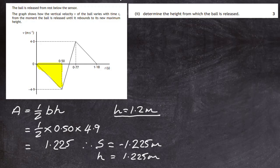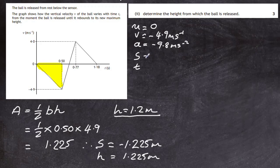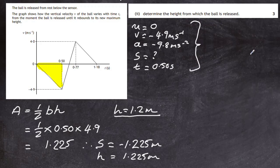If you're unsure which area to use or confused by the bounce section of the graph, you may prefer the kinematic equations method. We list our known quantities: initial velocity U = 0, final velocity V = minus 4.9 m/s, acceleration A = minus 9.8 m/s² (acting downwards), displacement S is what we're after, and time T = 0.50 seconds. Looking at our data book, a convenient equation that doesn't need much rearranging is S = UT + ½AT².